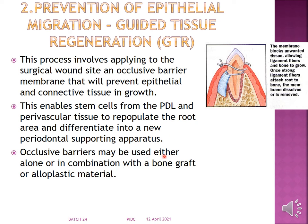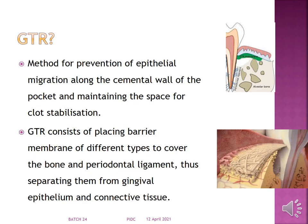Occlusive barriers may be used alone or in combination with a bone graft or alloplastic material. GTR is a method for prevention of epithelial migration along the cemental wall of the pocket, thereby maintaining a space for blood clot stabilization. GTR consists of placing a barrier to cover the bone and periodontal ligament, separating them from the gingival epithelium and connective tissue.